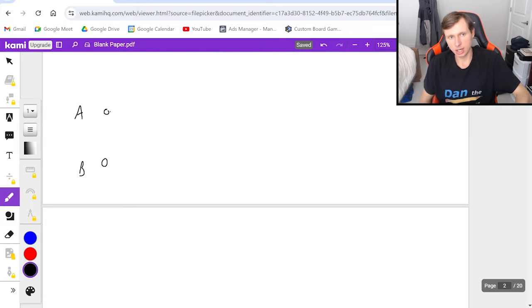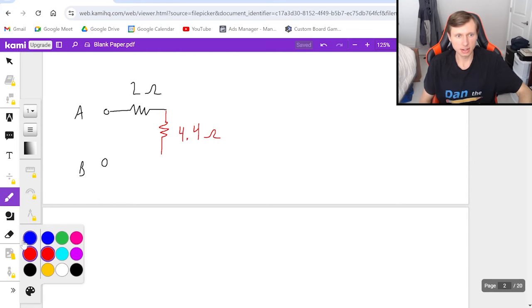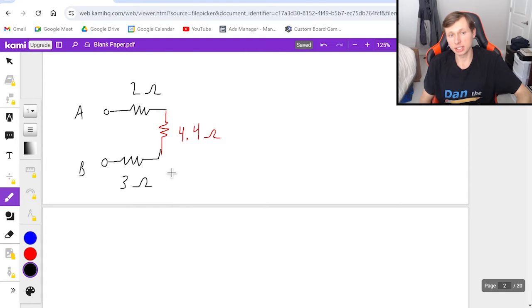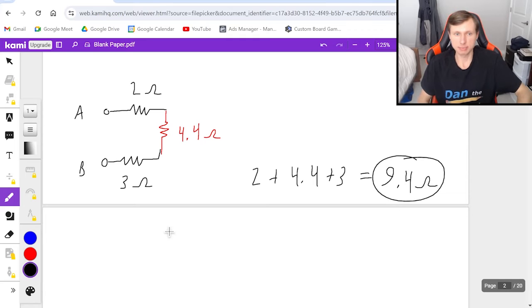And then rewriting it, I now have 2 ohms up here, a 4.4 ohm resistor right here, and then the last one is 3 ohms. And these three are in series with each other, so I can just add them up. 2 plus 4.4 plus 3, that's going to be 9.4 ohms, and that's my final answer.